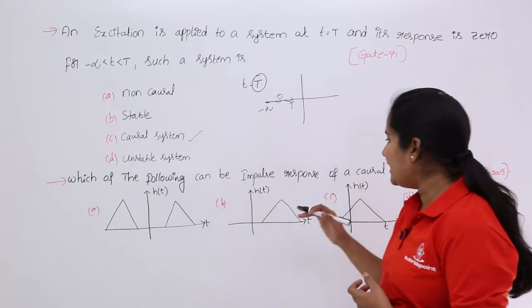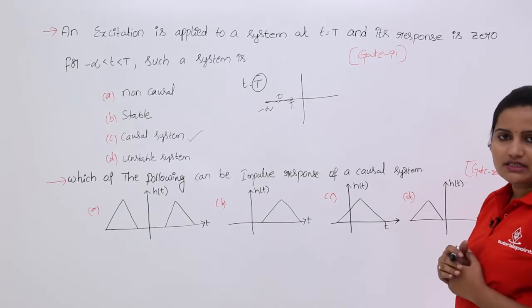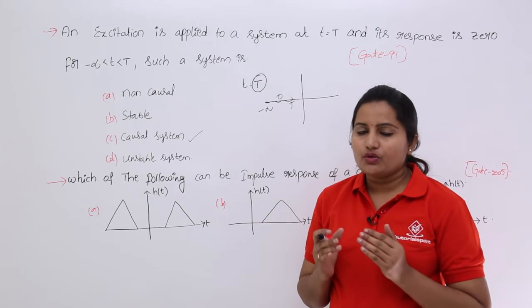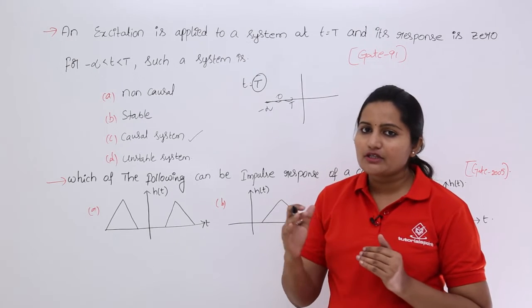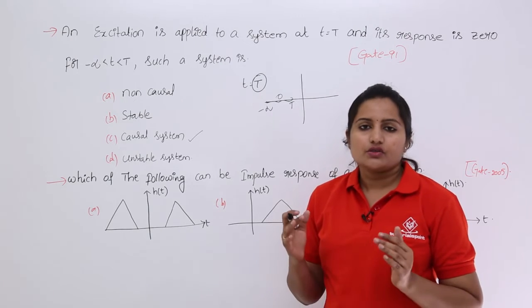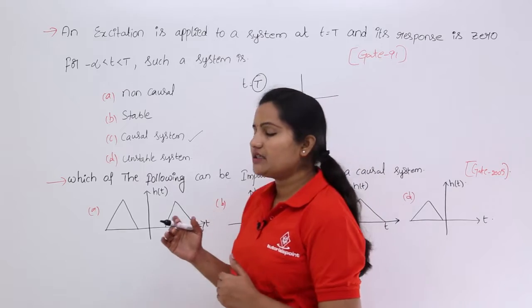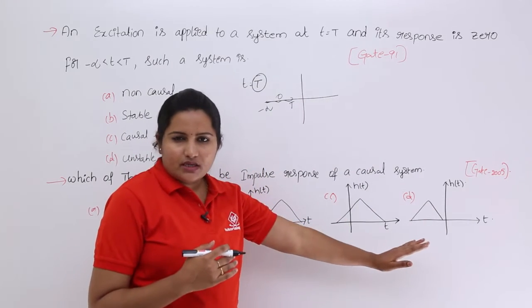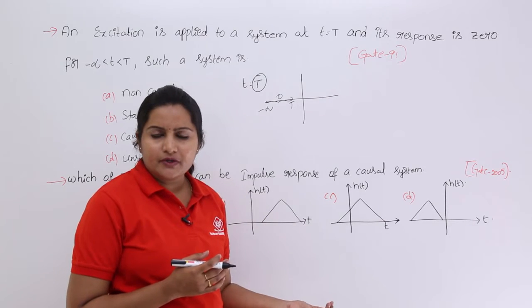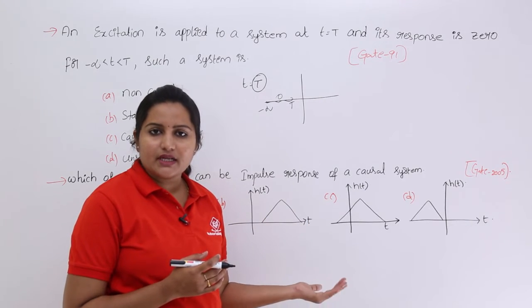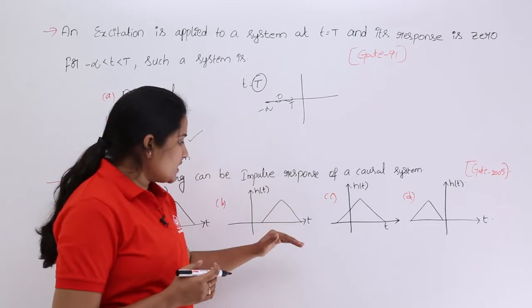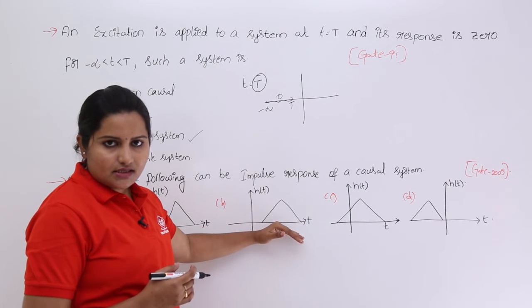Which of the following can be the impulse response of a causal system? This is given in GATE 2005. Here your response signal must always be a right-sided signal to get a causal system response. A system is said to be causal means it needs to depend upon present and past input. If it depends upon present and past inputs, you are going to get a right-sided signal — that is a causal system.